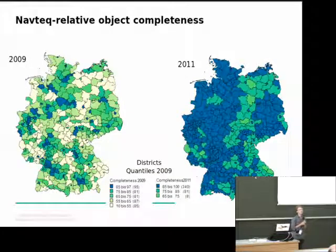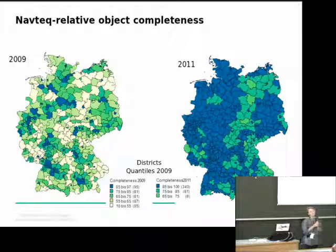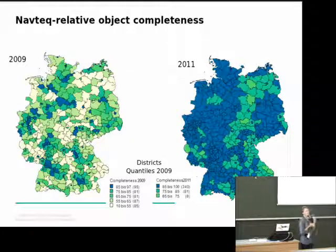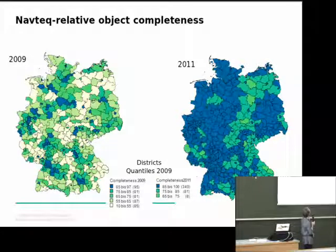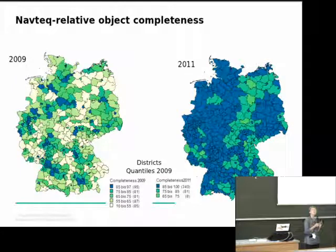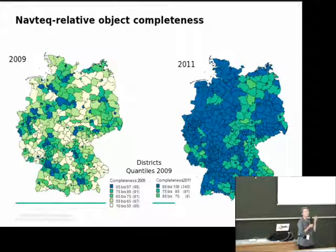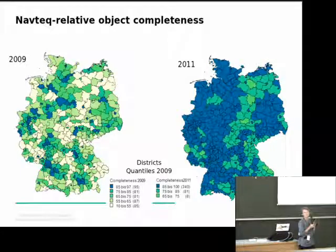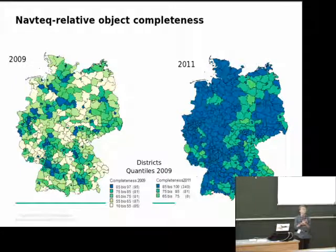On the left is a map produced by Ina. We have five classes, equally filled with districts in Germany, so every class has about the same number of districts. We used the same class borders for our new map. You can see that there are practically only two classes left — three classes of completeness have been removed because the data has become so complete at the level of districts, which I think is quite an impressive improvement.